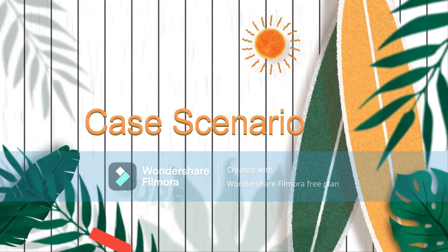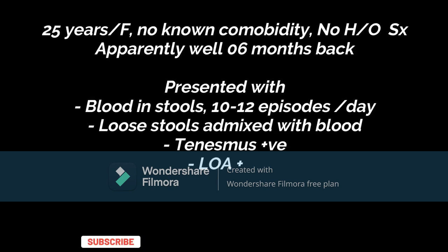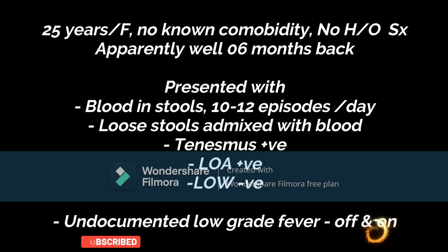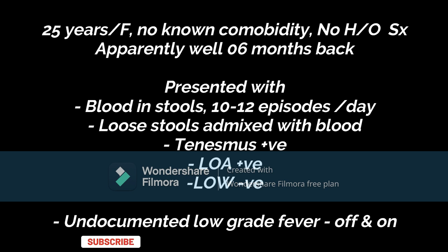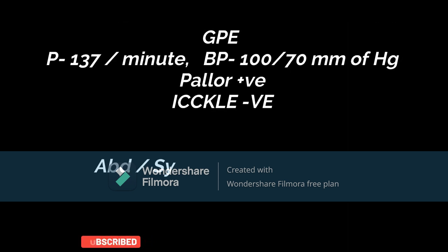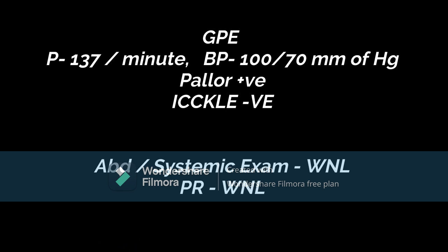A case presentation: a 25-year-old female with no known comorbidity and no history of past surgery who was apparently well 6 months back. She presented with history of blood in stool — 10 to 12 episodes per day, which came down to 6 to 8 episodes per day gradually. Stools were mixed with blood; she gave history of tenesmus, loss of appetite, no weight loss, and undocumented low-grade fever off and on. On examination, pulse was 137 per minute, BP was 100/70 mmHg, and she had pallor. Icterus, clubbing, cyanosis, koilonychia, lymphadenopathy, and edema were absent. Abdominal and systemic examination was within normal limits. Per rectal examination was normal except for loose stool with occasional blood.